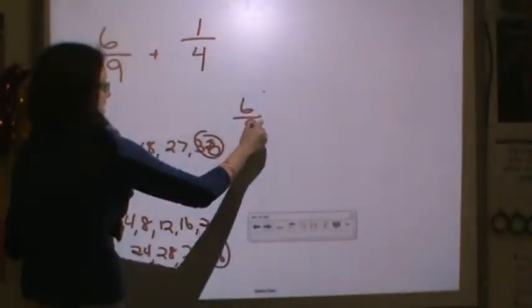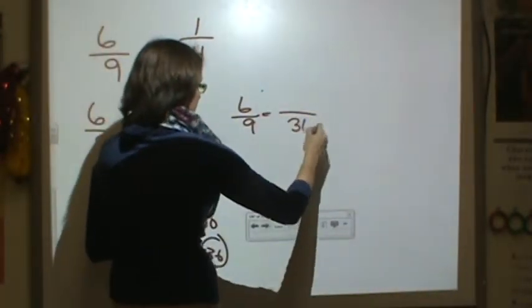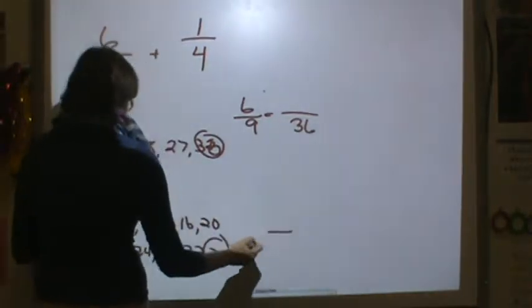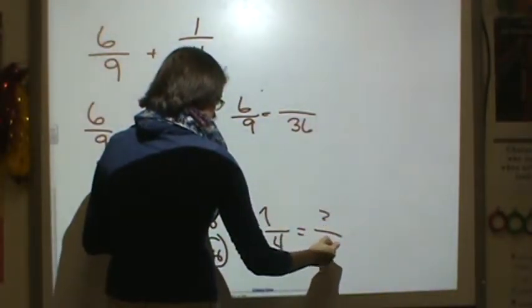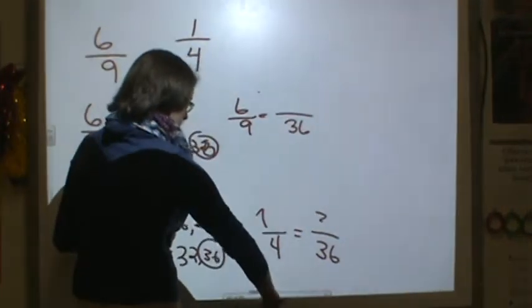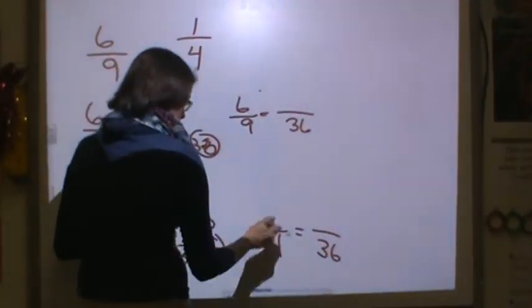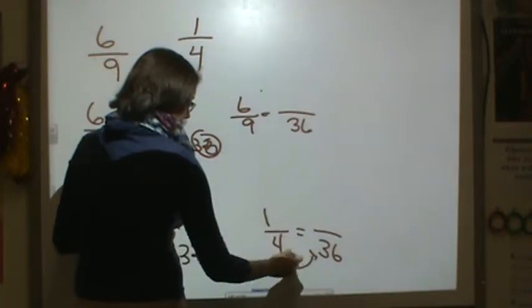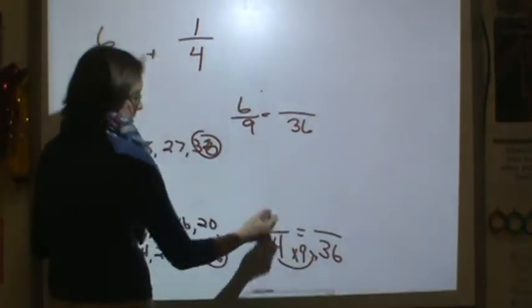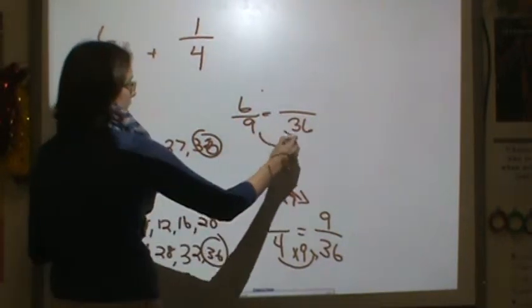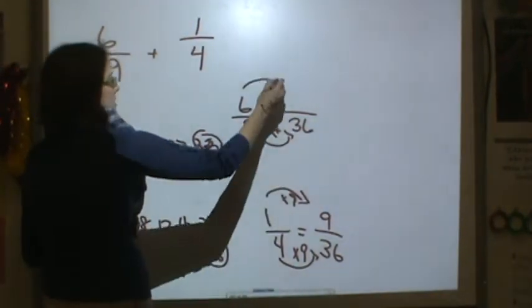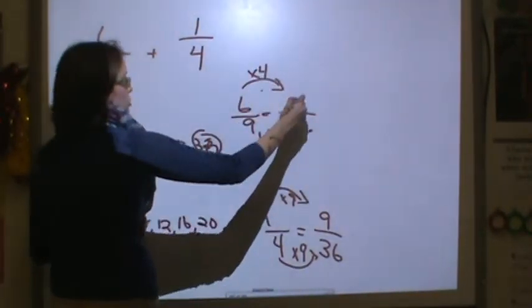So six-ninths is equal to something thirty-sixths. One-fourth is equal to something thirty-sixths. I'm going to make this look like a one. Now, four times what equals thirty-six? Four times nine. So one times nine is nine. Nine times four is thirty-six. So six times four is twenty-four.